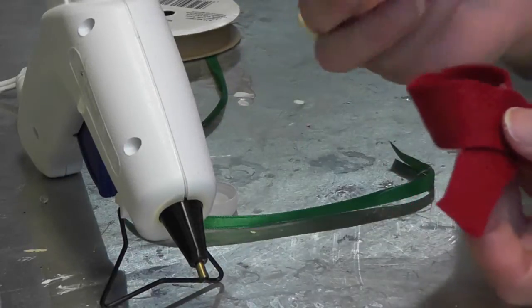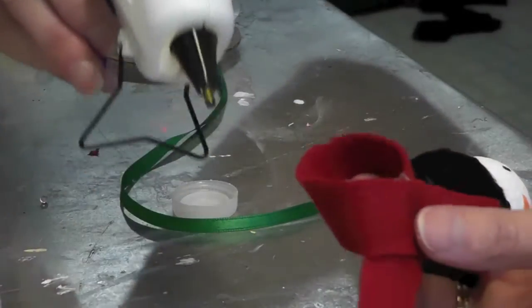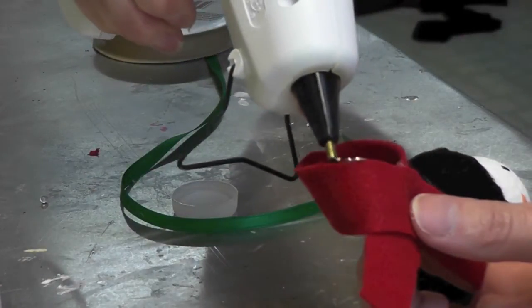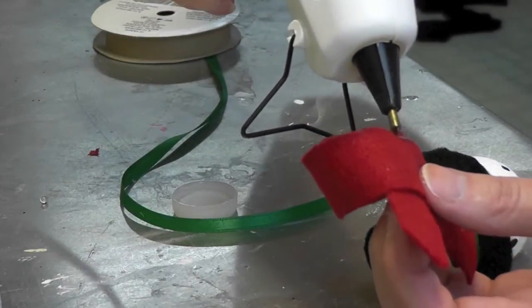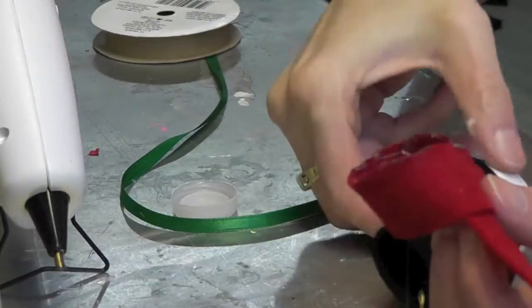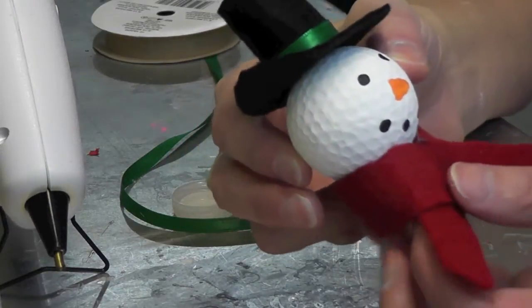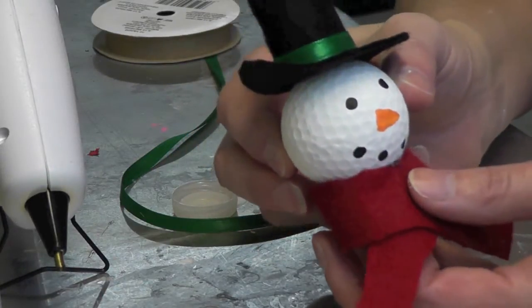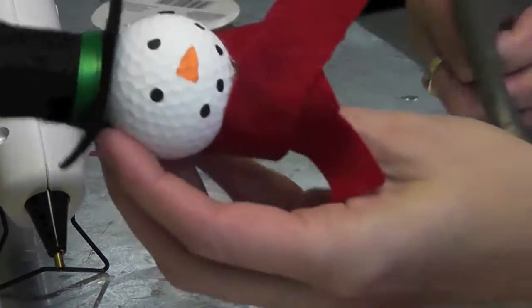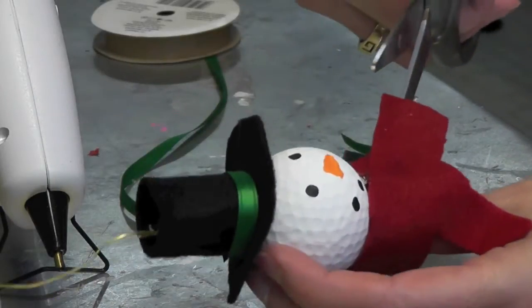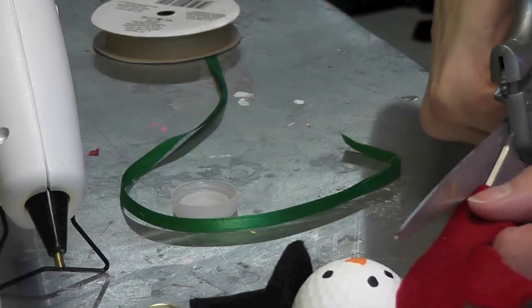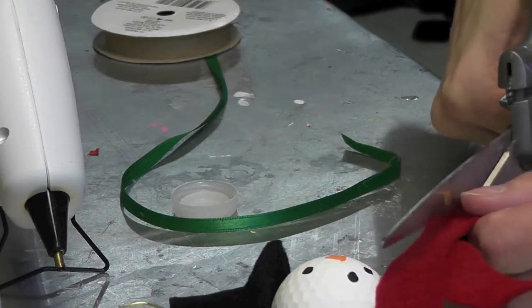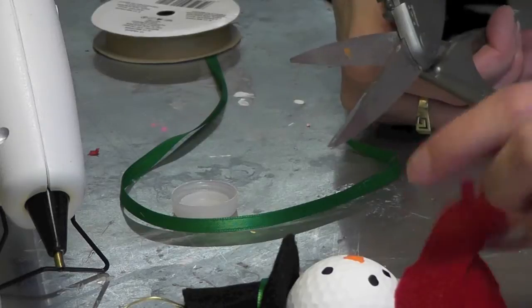And I'll let that cool and then I will put some hot glue along the edge here so he can sit right in there, and I'll hold it in place. Now to finish off the scarf, all I'm going to do is I'm going to fringe the edge of his scarf.